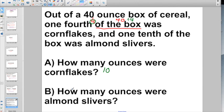How about this one? How many ounces were almond slivers? Well, it's telling you one-tenth of the box. How big was the box again? The box is 40 total ounces. One-tenth of the box. If the numerator's one, all you have to do is divide by the denominator.